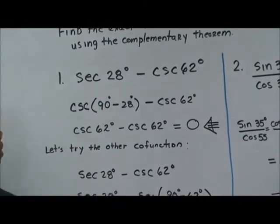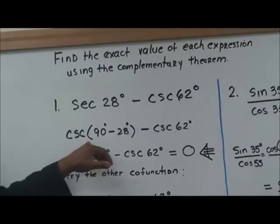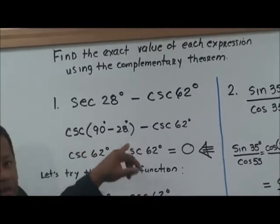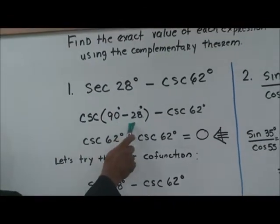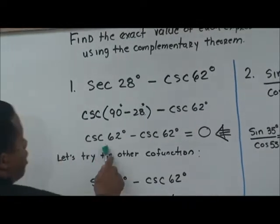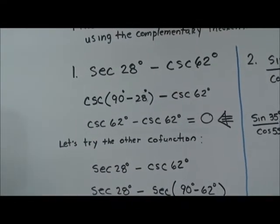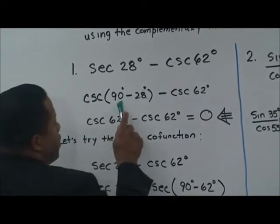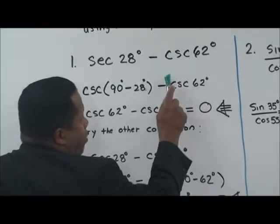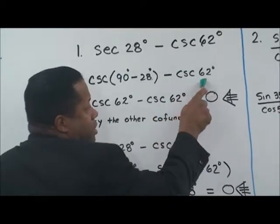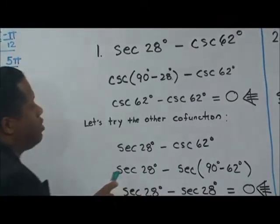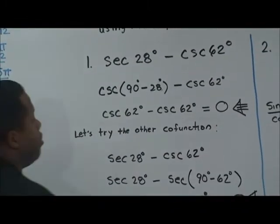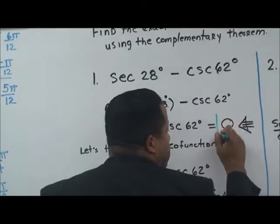If we use this here and convert this to cosecant 90 minus some angle θ, in this case which is 28 degrees, 90 minus 28 would be cosecant 62. So in this case, you bring that down. You also bring this minus cosecant 62. Now, cosecant 62 minus cosecant 62 will give you a result of zero.